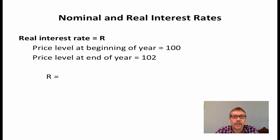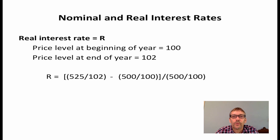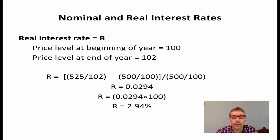We can calculate the return on the loan in the following manner. At the end of the year, the amount of the loan that needs to be repaid is $525. To convert this to real terms, we simply divide by the price level at the end of the year. From this, we subtract the principal divided by the price level at the beginning of the year, and then this difference is divided by the principal divided by the initial price level. Doing the calculation tells us that the real return will be 0.0294. To convert this to a percentage, we simply multiply by 100, so the real return on the loan is 2.94%.